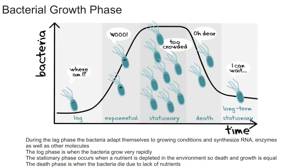In this video I'm going to explain the four phases of bacterial growth. You may notice there are five phases: the lag, exponential, stationary, death, and long-term stationary. Most people don't talk about the long-term stationary phase as one of the main phases, so in this video we won't cover it. In most classes it's just the four phases.